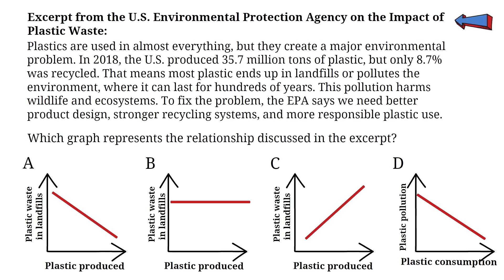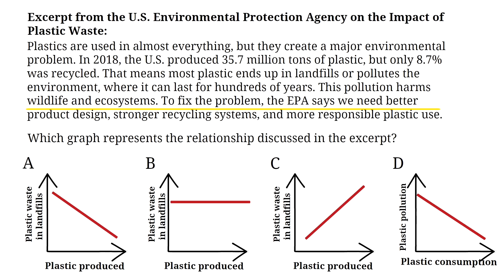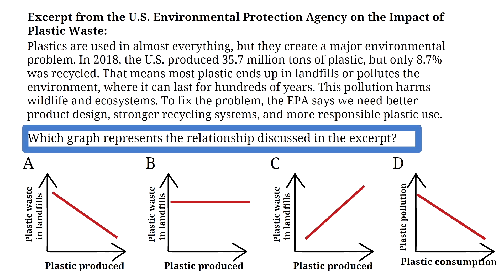Read the excerpt from the U.S. Environmental Protection Agency on the impact of plastic waste and answer the following question. Plastics are used in almost everything, but they create a major environmental problem. In 2018, the U.S. produced 35.7 million tons of plastic, but only 8.7% was recycled. That means most plastic ends up in landfills or pollutes the environment, where it can last for hundreds of years. This pollution harms wildlife and ecosystems. To fix the problem, the EPA says we need better product design, stronger recycling systems, and more responsible plastic use. Which graph represents the relationship discussed in the excerpt?